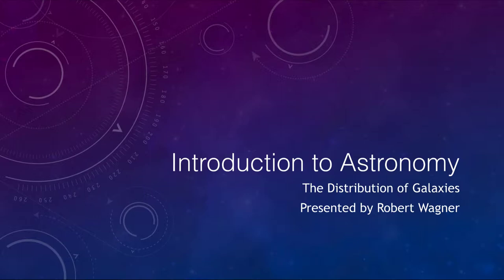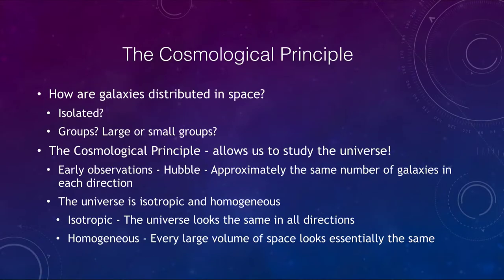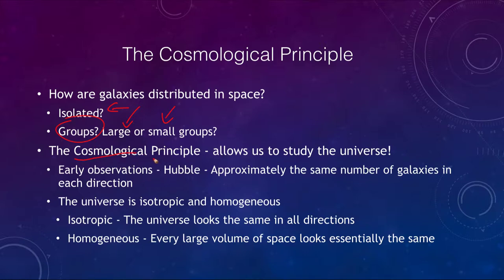What we want to look at is how the galaxies are distributed. Are they isolated, or are they in groups? And if they're in groups, are they in large groups or small groups? That leads us to what we call the cosmological principle.